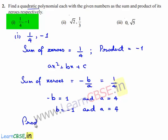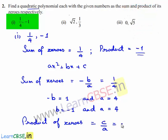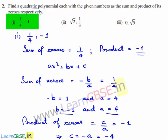Also, the product of zeros is equal to c/a, which is nothing but the given product equal to -1. So we can write c is equal to -a. We also found the value of a to be 4, therefore c is equal to -4. So we have a = 4, b = -1, and c = -4.